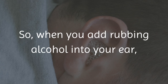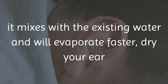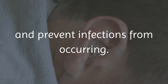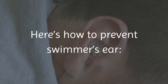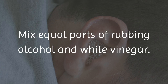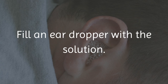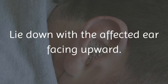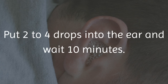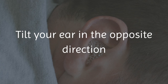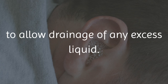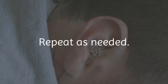Rubbing alcohol evaporates easier and faster than water. So when you add rubbing alcohol into your ear, it mixes with the existing water and will evaporate faster, dry your ear, and prevent infections from occurring. Mix equal parts of rubbing alcohol and white vinegar. Fill an ear dropper with the solution. Lie down with the affected ear facing upward. Put 2 to 4 drops into the ear and wait 10 minutes. Tilt your ear in the opposite direction to allow drainage of any excess liquid. Repeat as needed.